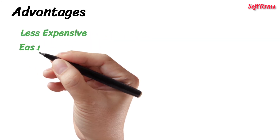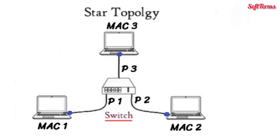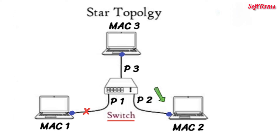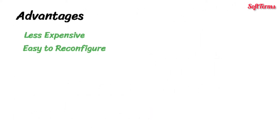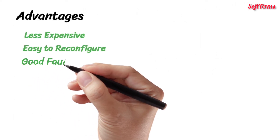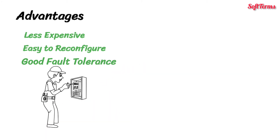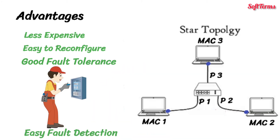It is also easy to reconfigure because we can add or remove devices simply by connecting or disconnecting one cable. If one cable connected to the central device fails, only one communication link goes down — not the entire network. So, star topology has good fault tolerance. Fault detection is also easy because we only need to locate the computer that is not receiving data.